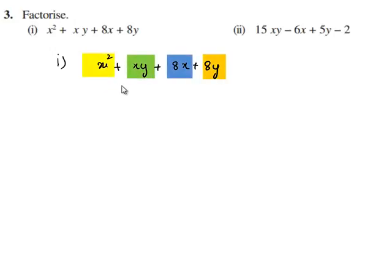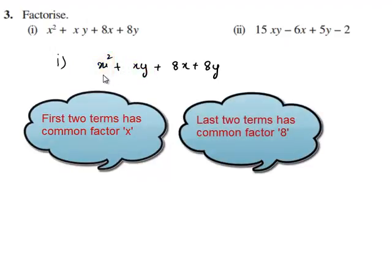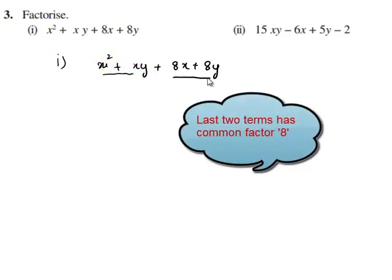So we find that there is no common term in all four terms. And we can also see that the first two terms have x as common and the second two terms have 8 as common.